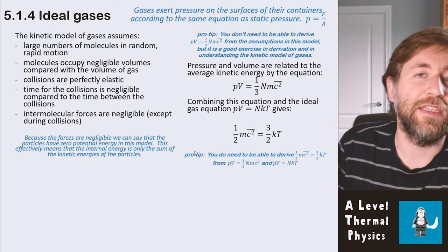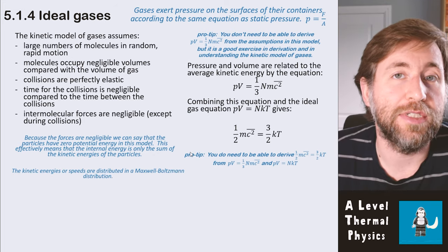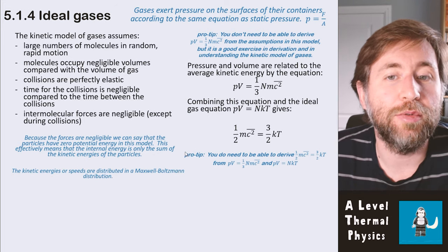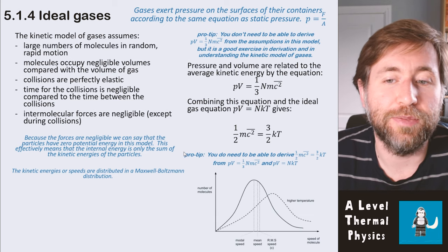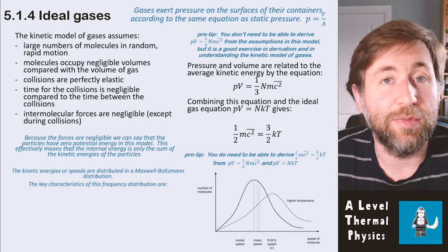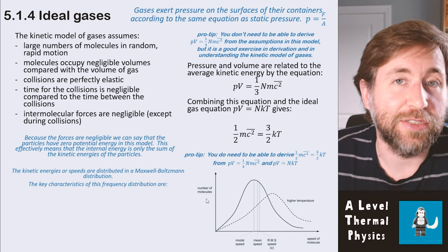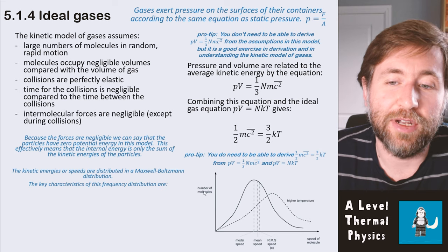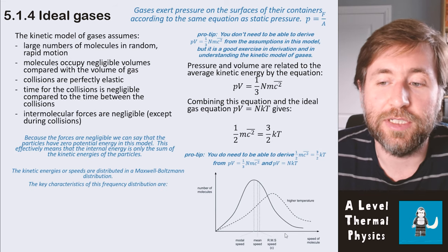We can say that the kinetic energies or the speeds of these particles in any ideal gas are distributed in what we call a Maxwell-Boltzmann distribution. And that looks something like this. There are a few key characteristics that you need to be familiar with of this type of distribution. Let's just make sure we understand the graph first. It's a frequency graph. It tells you how many molecules are at each speed.